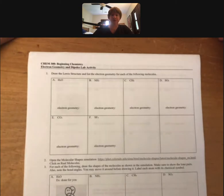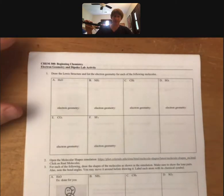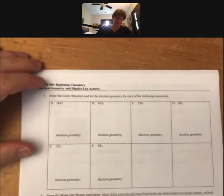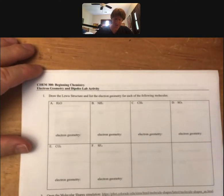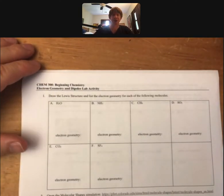This is the electron geometry and dipoles activity. For this first part we want to draw the Lewis structure and list the electron geometry for each of the following molecules.